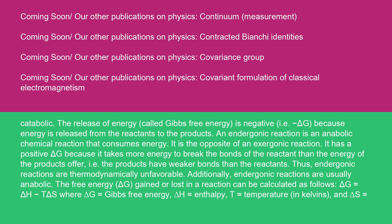The free energy, delta G, gained or lost in a reaction can be calculated as follows: delta G equals delta H minus T delta S, where delta G equals Gibbs free energy, delta H equals enthalpy, T equals temperature in kelvins, and delta S equals entropy.